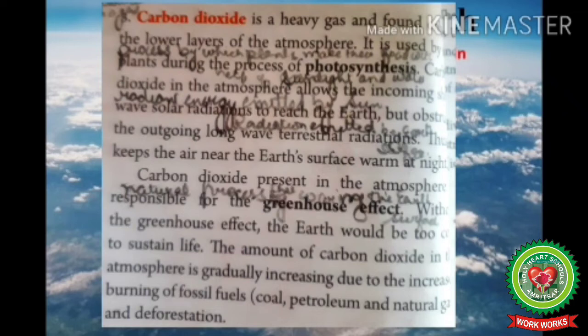Carbon dioxide present in the atmosphere is responsible for the greenhouse effect. Without the greenhouse effect, the earth would be too cold to sustain life. Basically, the greenhouse effect is a natural process that keeps the earth's surface warm by trapping greenhouse gases. The amount of carbon dioxide in the atmosphere is gradually increasing due to increased burning of fossil fuels — fuels formed by decomposition of dead plants and animals such as coal, petroleum, and natural gas — and deforestation, meaning cutting of trees on a large scale, which creates an imbalance in the earth's ecosystem.